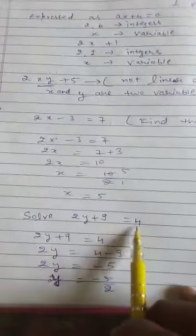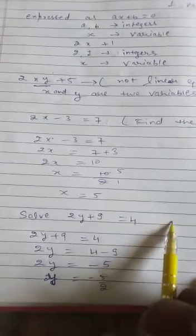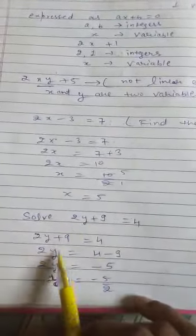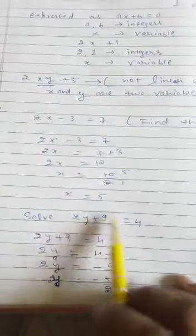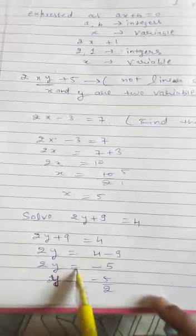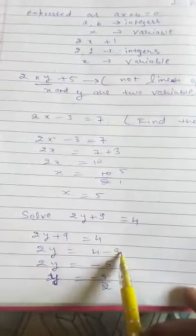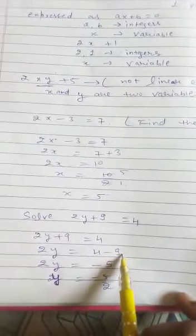Now one more example I am giving. Likewise 2y plus 9 is equal to 4. This is the linear equation in one variable. Here we need in left hand side y. So 2y plus 9 is equal to 4. 2y, 9 we will shift right hand side. 2y here plus then it will be minus 9.